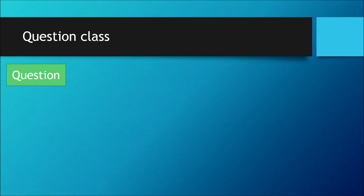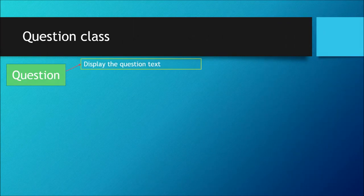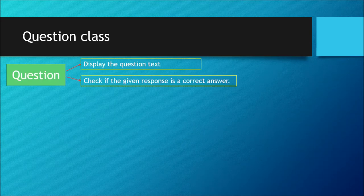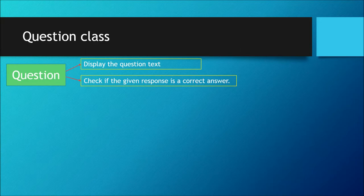Let's take a look at the Question class. When we talk about a question class, a question means it displays the question — that's the text of the question — and then it checks if a given response is the correct answer. So when we talk about a question, we need to know two important things: one is the question itself, and the other is what the correct answer is.